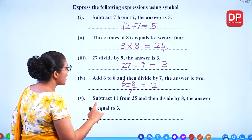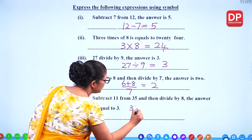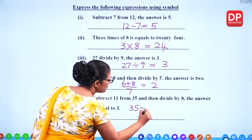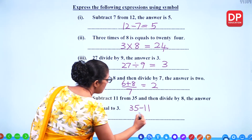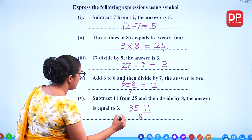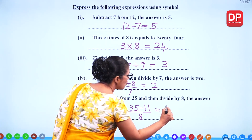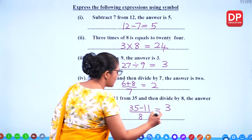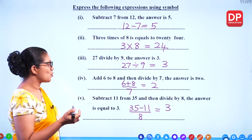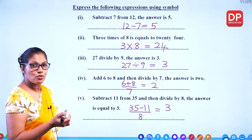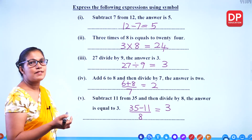Subtract 11 from 35, then divide by 8. The answer is equal to 3. Let's check: 35 minus 11 is 24, and 24 divided by 8 is 3. That's correct.